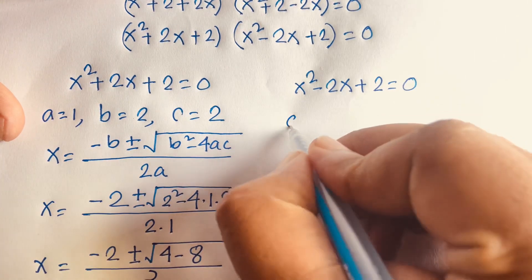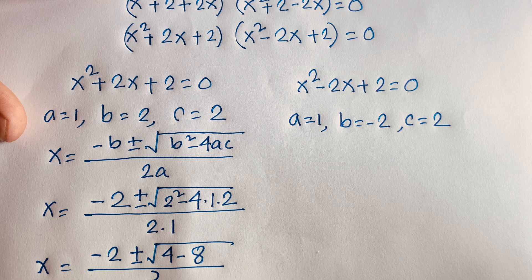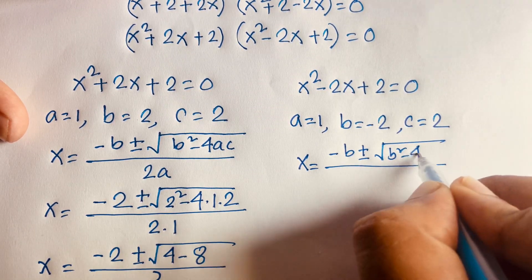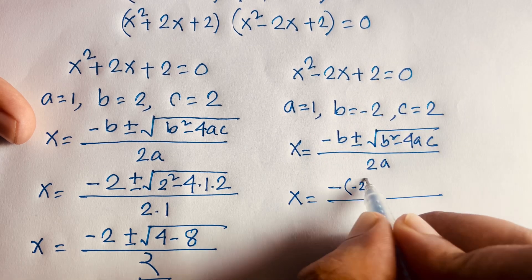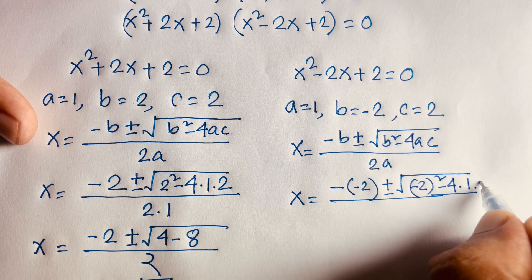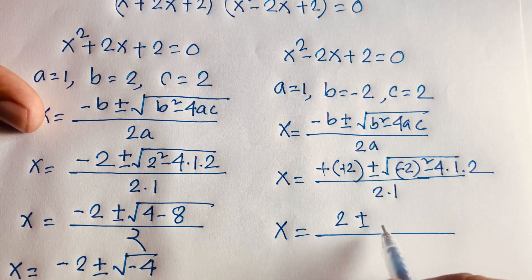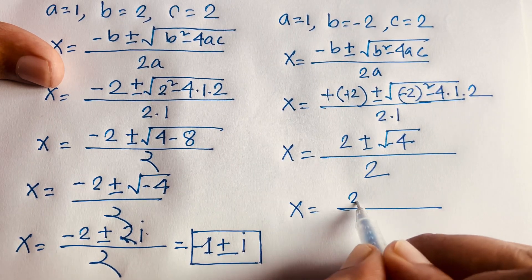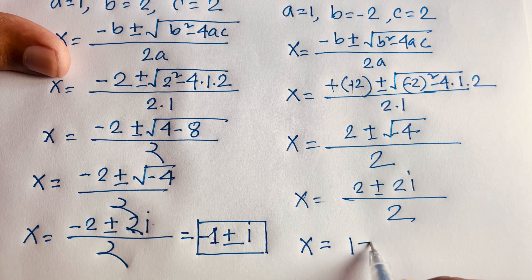For Case 2: a = 1, b = -2, c = 2. Using the quadratic formula: x = (-(-2) ± √((-2)² - 4·1·2)) / (2·1) = (2 ± √(4 - 8)) / 2 = (2 ± √(-4)) / 2 = (2 ± 2i) / 2. Dividing by 2 gives x = 1 ± i.